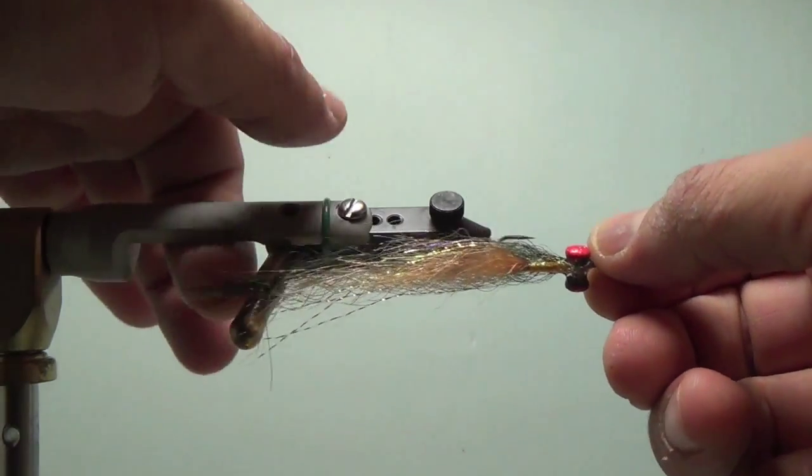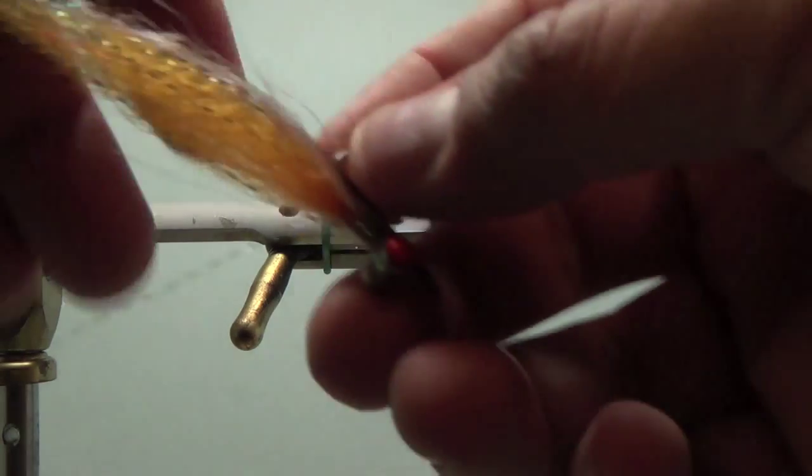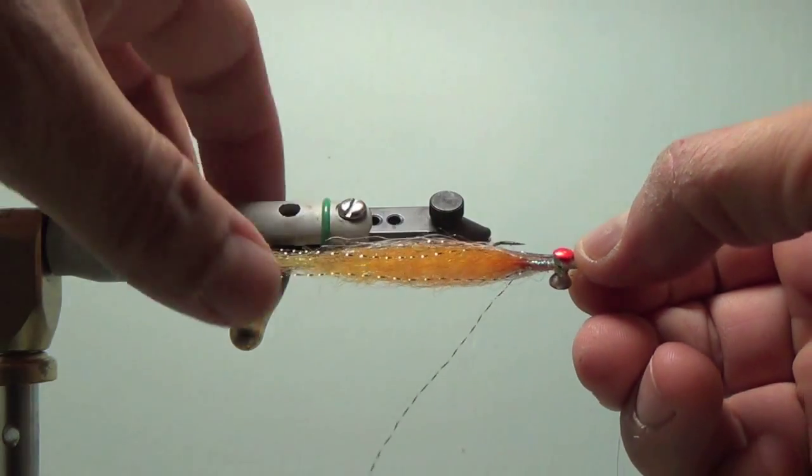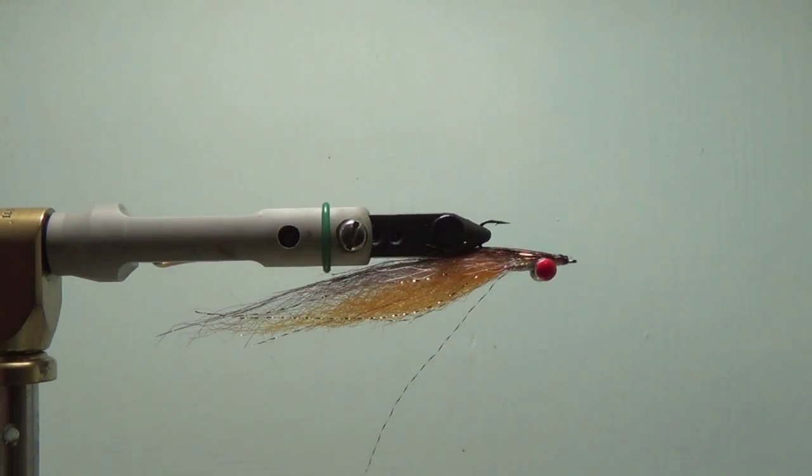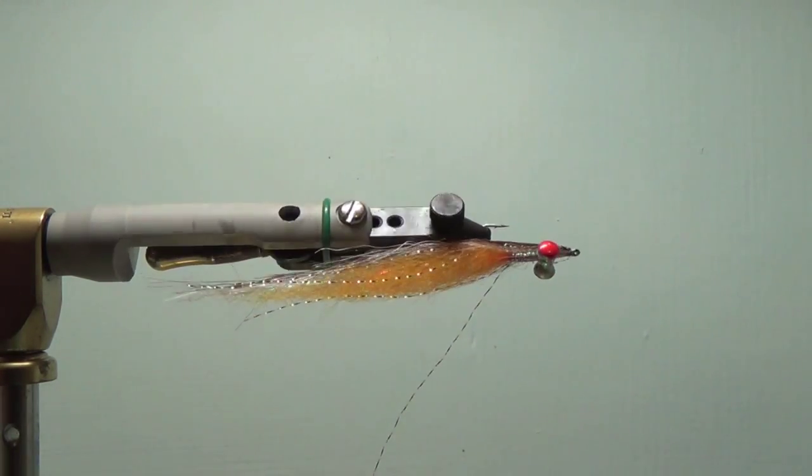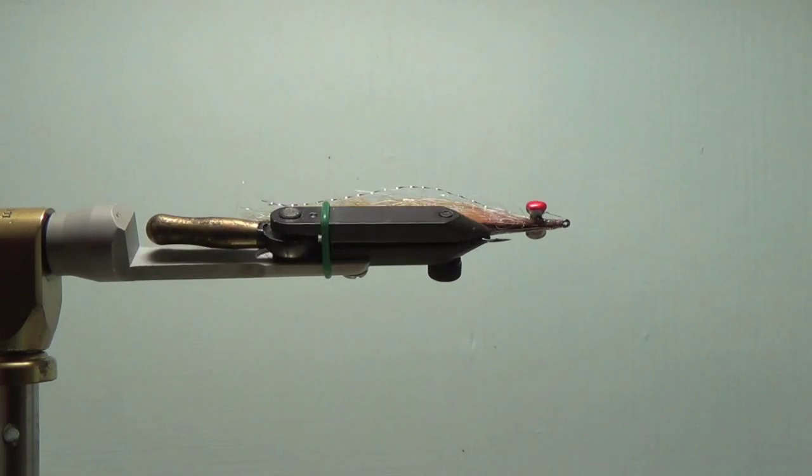But for this tie here, what I'm going to show, I'm going to go back to the original one and show the fly, the Liberace Clouser DV, and show that one up. So here we go.